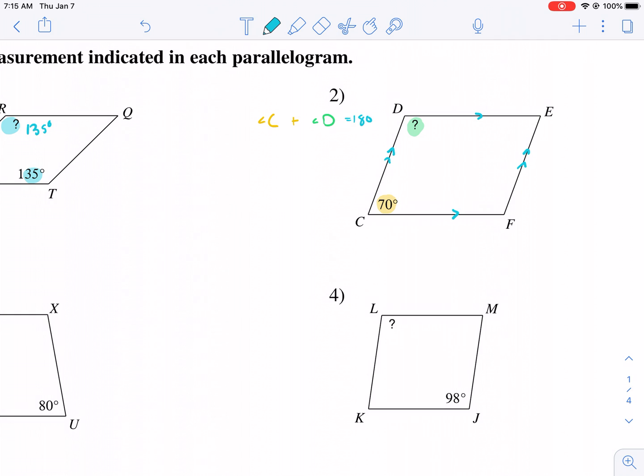are supplementary to each other. So we know that angle C plus angle D needs to equal 180. So it's just a really simple equation after that. So we have 70 plus angle D equals 180. You subtract 70 from both sides, and you get angle D equals 110.